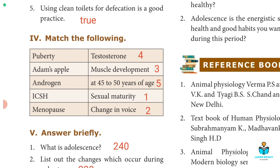Match the following section: Puberty — sexual maturity. Adam's apple — change in voice. Androgen — muscle development. ICSH — testosterone. Menopause — 45 to 50 years of age.